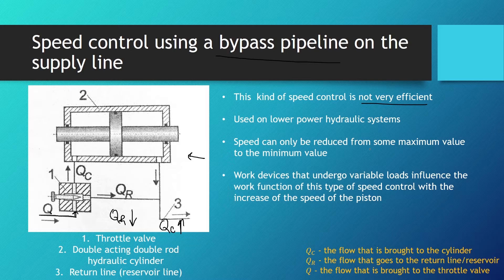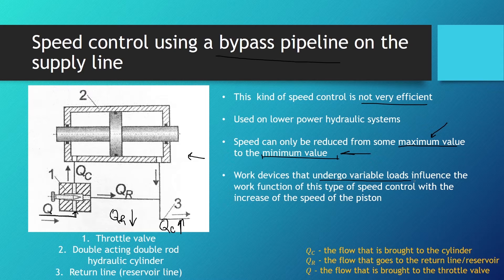Another weakness of this speed control type is that speed can only be reduced from some maximum value to a minimum value. Flow efficiency is highest at maximum flow and lowest at minimum flow. A third weakness appears when work devices undergo variable loads, which can cause an increase in piston speed that influences its work function. So if variable loads will influence the hydraulic cylinder, this kind of speed control system is not typically used.